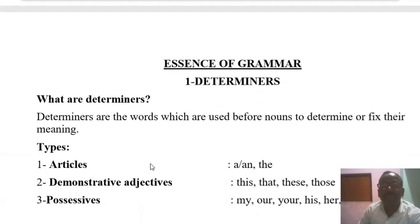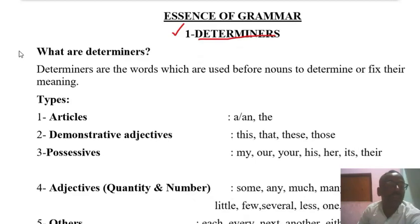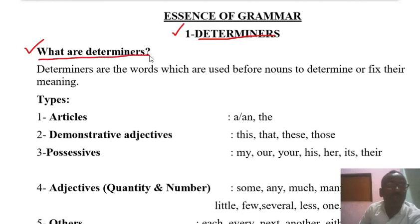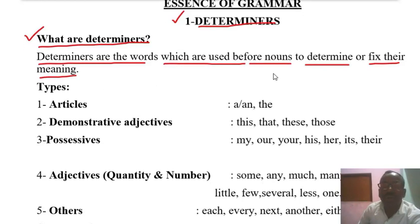Let's study these one by one. The essence of grammar in this section — first of all, we try to understand Determiners. The first question of this section is very simple: what are Determiners? If anybody asks us what Determiners mean, the answer is: Determiners are the words which are used before nouns to determine or fix their meaning. We use Determiners before nouns to fix the meaning.